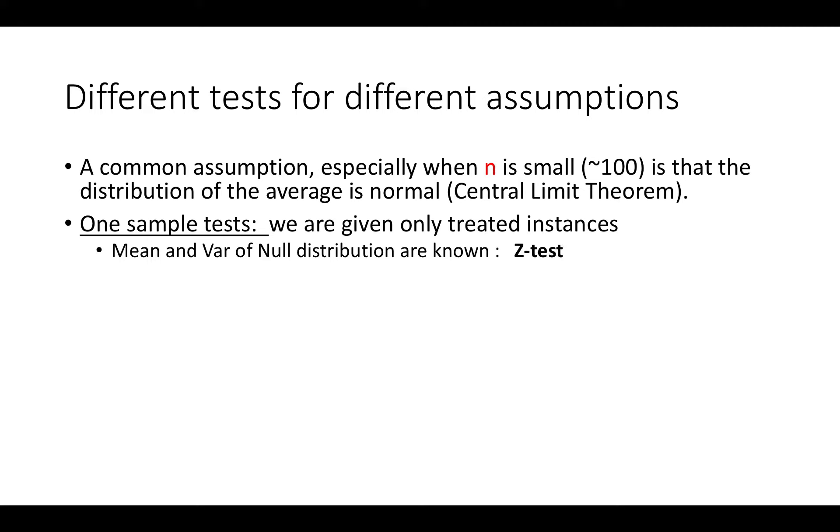So if we know for the untreated both the mean and the variance of the null distribution and the null distribution is normal then what we get is the z-test. So the z-test we talked about before it's just the 1 minus the CDF of the normal distribution.